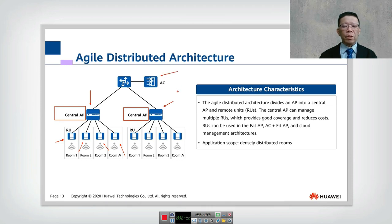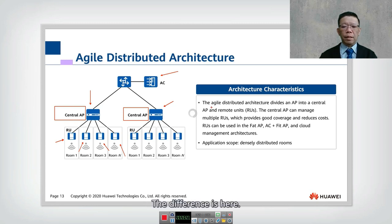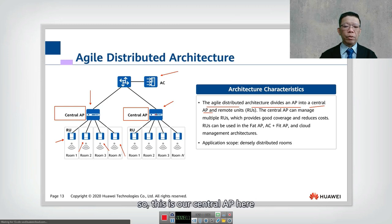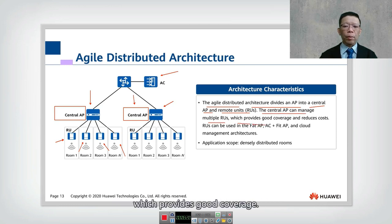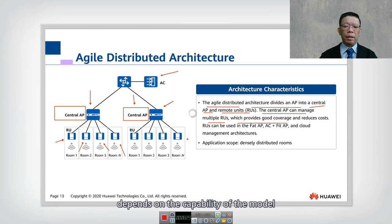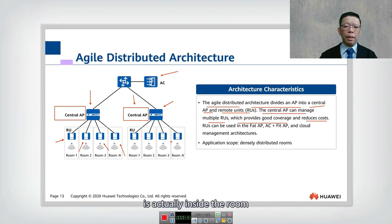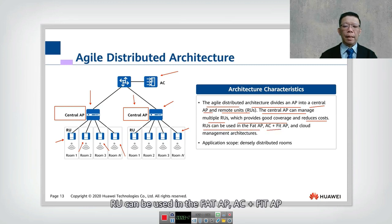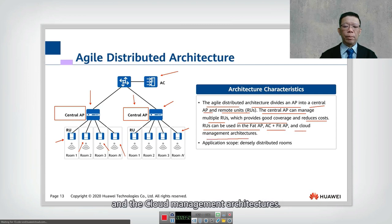The central AP does not operate independently — it is still a Fit AP controlled by the centralized AC. The difference in the Agile Distributor architecture is that the AP is divided into a central AP and remote units (RUs). One central AP can manage multiple RUs, providing good coverage across multiple rooms. This reduces cost because the antenna is inside each room as a low-cost radio unit. RUs can be used in Fat AP, AC plus Fit AP, and cloud management architectures.